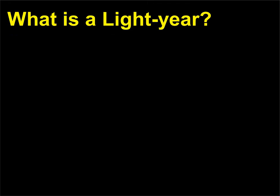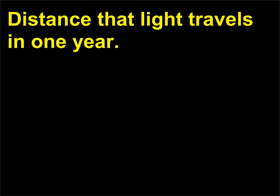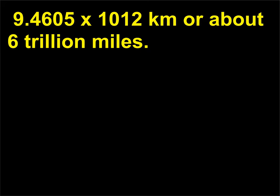What is a light year? Distance that light travels in one year. 9.4605 × 10¹² kilometers or about 6 trillion miles.